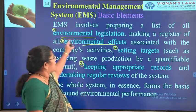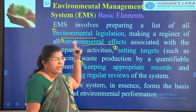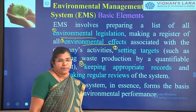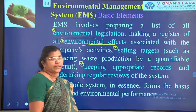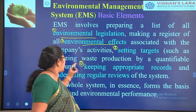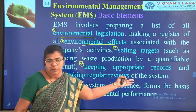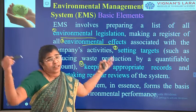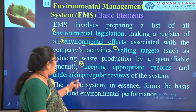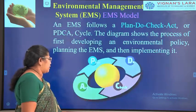The main elements to remember: environmental legislation must be followed, the environmental effect of the company on society must be reduced, and a realistic target must be set — such as reducing waste production by 10%, 20%, or 25% — keeping appropriate records and undertaking regular reports. These are achieved by creating an EMS model.